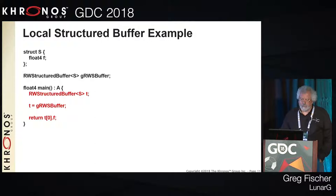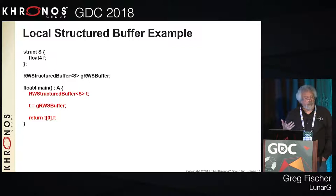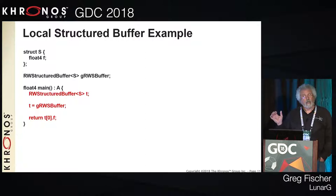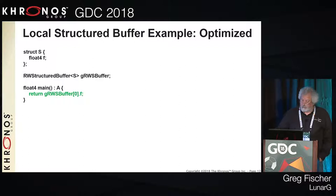Another structure that SPIR-V Opt takes care of is local structured buffers. Here's an example — a simplistic one, but the pattern holds out in a number of shaders in the wild — where you have a global structured buffer declared, but inside a function or main you have a local structured buffer declared and assigned the value of the global buffer, and then the local object is referenced. Again, we use compiler techniques to transform that into just a reference to the global object.